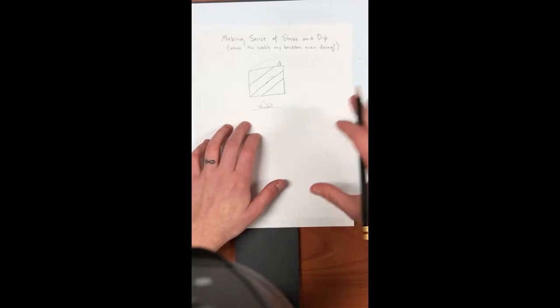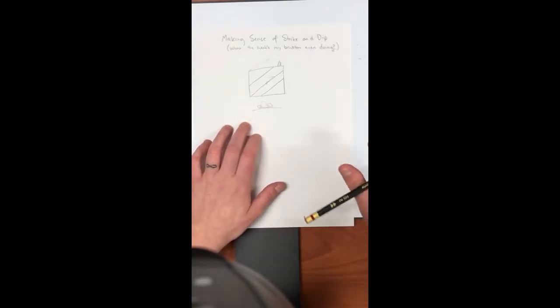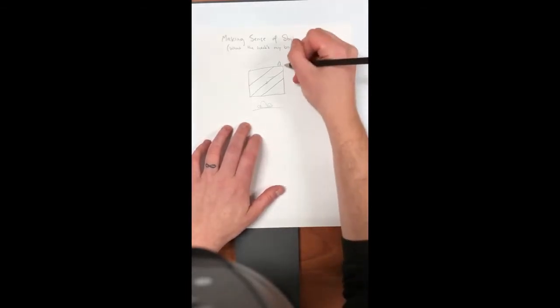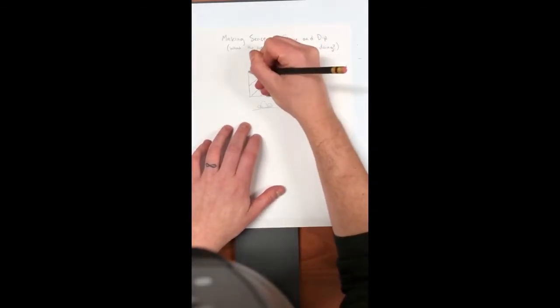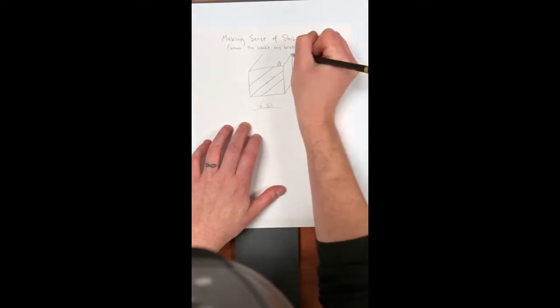Remember rocks get laid down in layers. So just like a layer cake, if you were to peel off a layer, that's a surface. So we don't just want to record a line, we want to record that whole surface. So in 3D, that's where the information is that we really want.